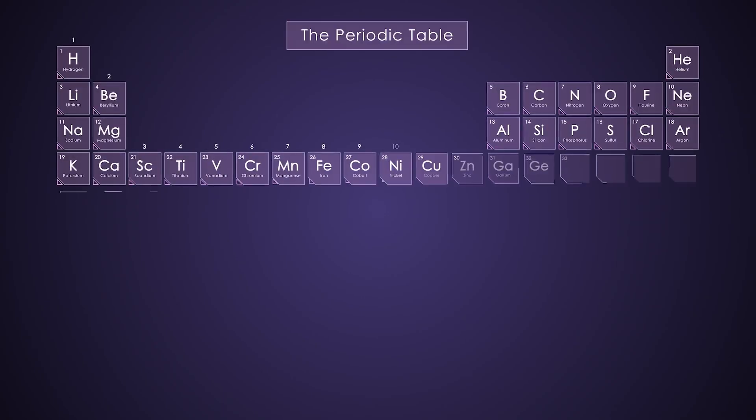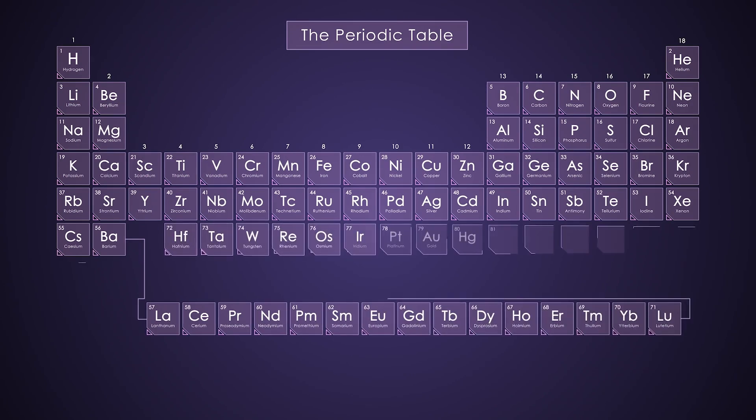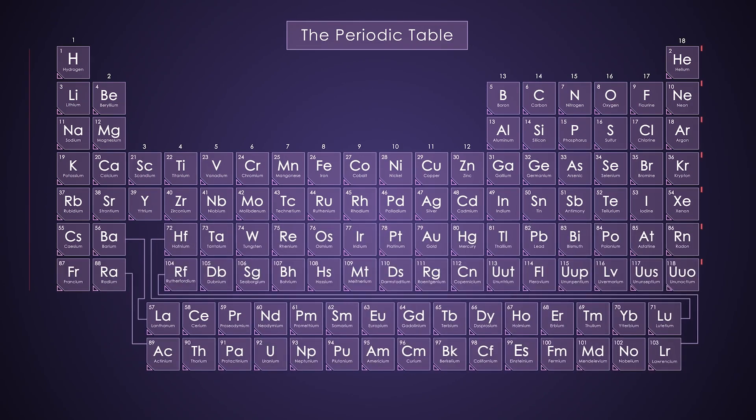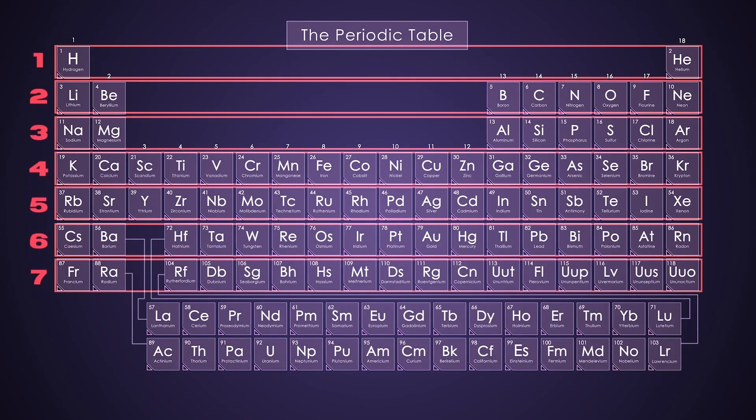The periodic table gives information about individual elements, as well as elements with similar properties. The seven rows in the periodic table are known as the periods. Each element in a particular row has the same number of electron shells surrounding the atomic nucleus.